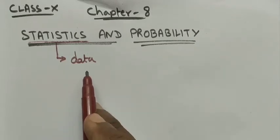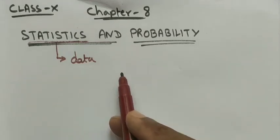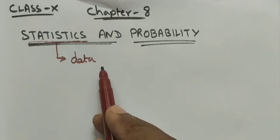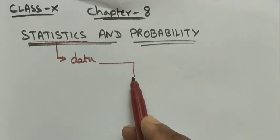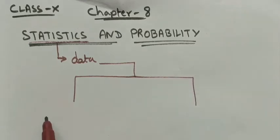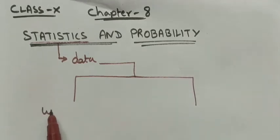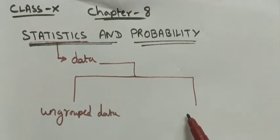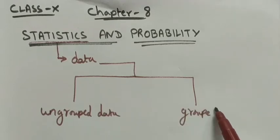We have studied that data is of two types: one is ungrouped data, and the other one is grouped data.